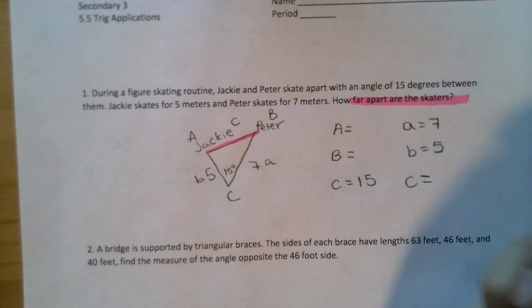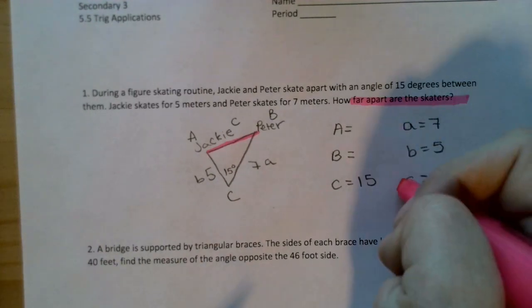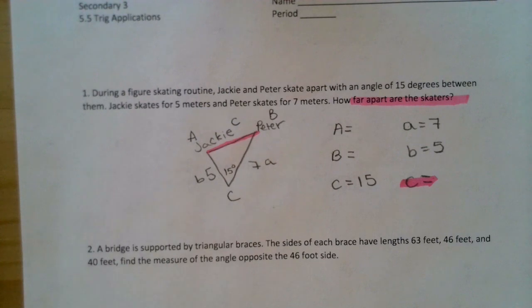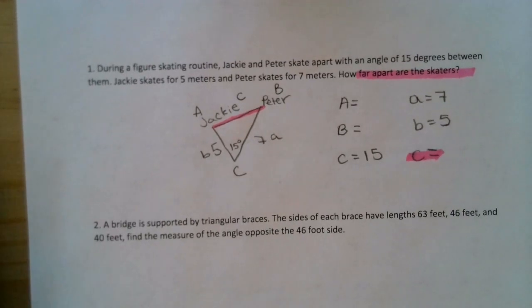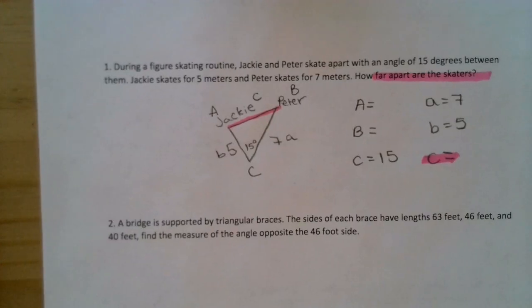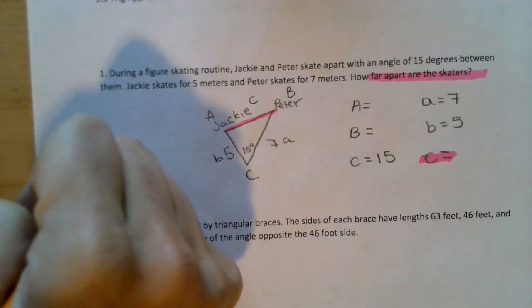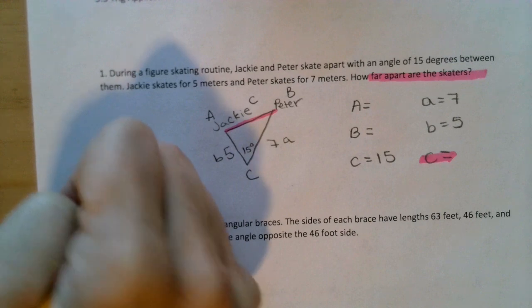Now, when we were learning Law of Sines and Cosines, we were finding every missing angle and side. But this time, all we need to do is find what's given to us. So this is why I'm highlighting it. Because could we find these? Yes. But do we have to? No. Our goal is to find, in this case, C - how far Jackie and Peter are apart. So now that we drew it and we know what we're solving for, what law are we going to use? We have two sides and an angle. There are no pairs. So that means we are going to use Law of Cosines.